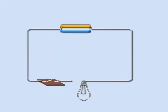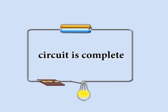This circuit doesn't work because there is a gap in the wire. The circuit still doesn't work because the switch is open. Once the switch is closed, the bulb lights up, which shows the circuit is complete.